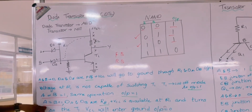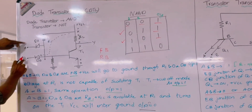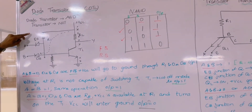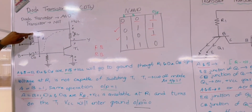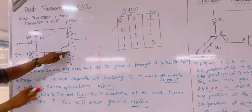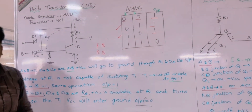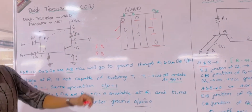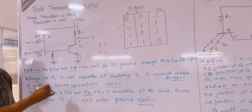The final condition is A and B equal to 1,1. When both inputs are 1, the two diodes become reverse biased. The VCC power supply is then available at resistor R1, which automatically switches on transistor T1, making VCC pass to ground. When T1 turns on, the output becomes 0. This is similar to a NAND gate operation — that is how DTL works.